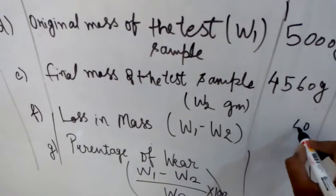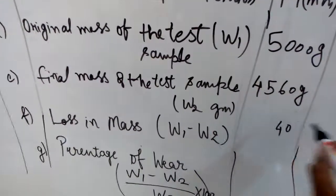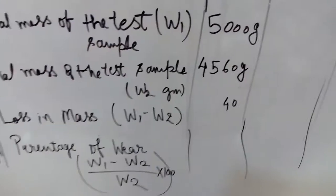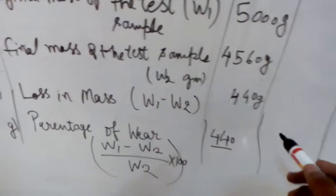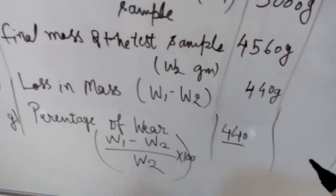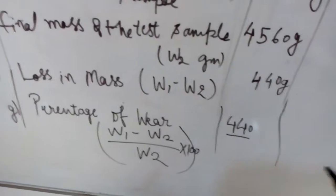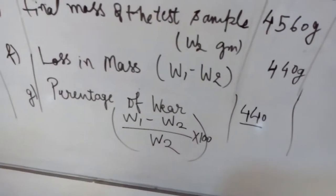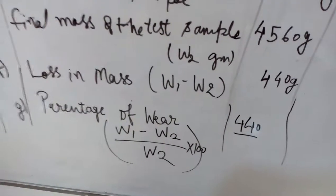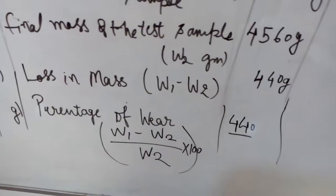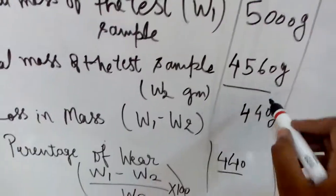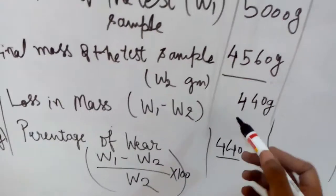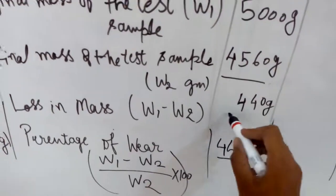We subtract W2 from W1 to get the loss in mass. The loss in mass is 440 grams. The percentage of wear is calculated as: W1 minus W2, divided by W1, multiplied by 100. With W1 = 5,000 and W2 = 4,560, the loss is 440 grams.